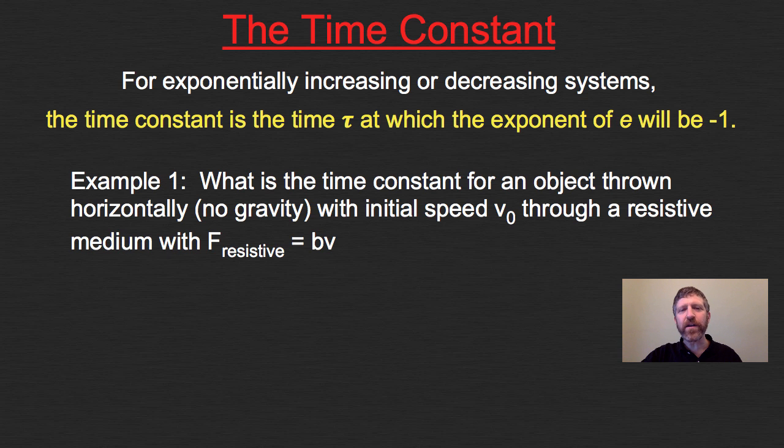Let's take an example. What's the time constant for an object thrown horizontally with no gravity, initial speed V0, through a resistive medium with resistive force equal to bv? As we've derived in prior videos, the equation for V in terms of t is V = V0 * e^(-bt/m).